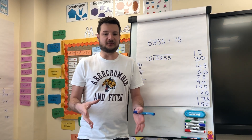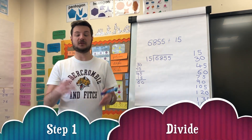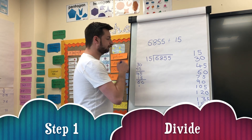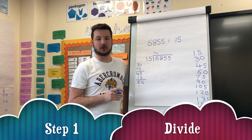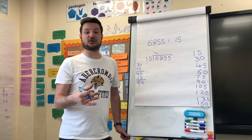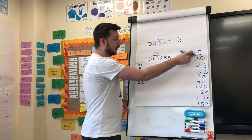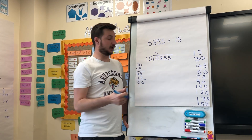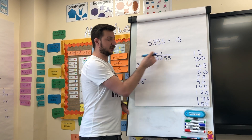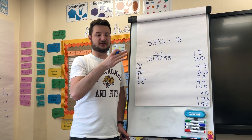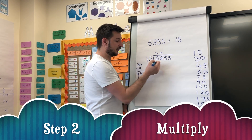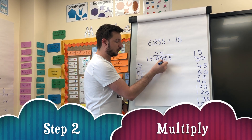So now we are ready to divide. Step one: divide. Fifteens into six doesn't go — put a line there to say it doesn't go in. Fifteens into sixty-eight: fifteen does go into sixty-eight four times. So there is our division — sixty-eight divided by fifteen is four. Divide, multiply: fifteen multiplied by four is sixty. We're going to write that underneath.